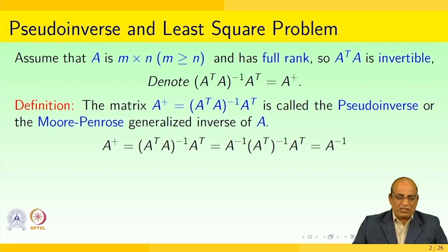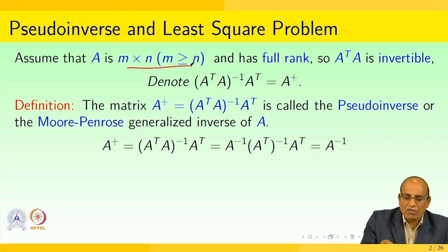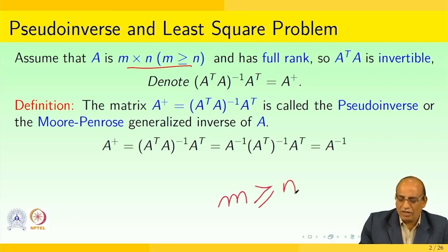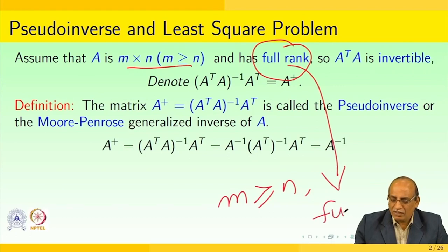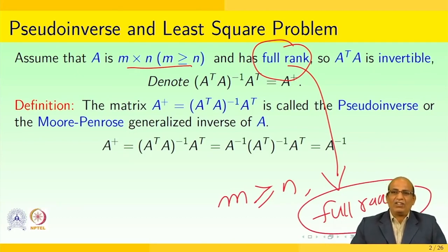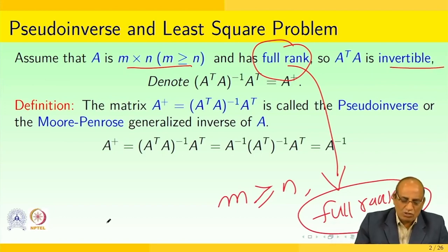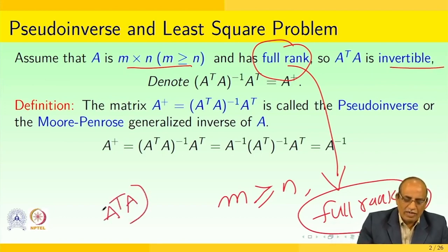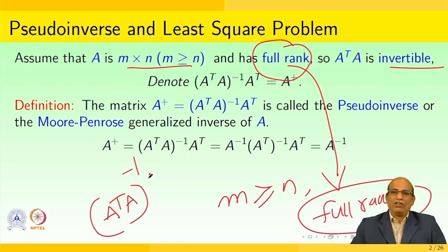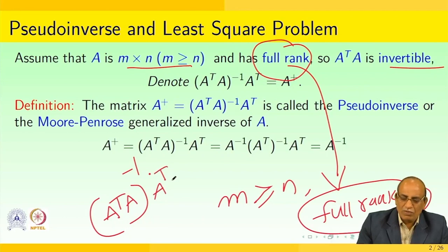The pseudo inverse is a kind of inverse where we try to use the decomposition through the least square problem. Let us assume that A is an m by n matrix where m is greater than or equal to n and has full rank. Since A has full rank, A transpose A is invertible, meaning we can find A transpose A inverse. So A transpose A inverse multiplied with A transpose will be equivalent to A plus.